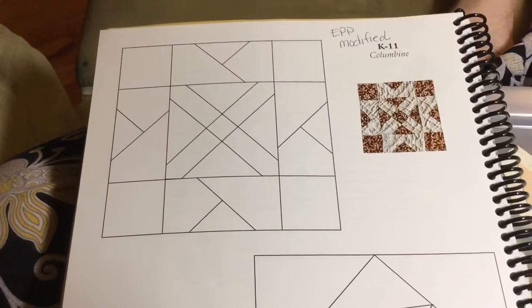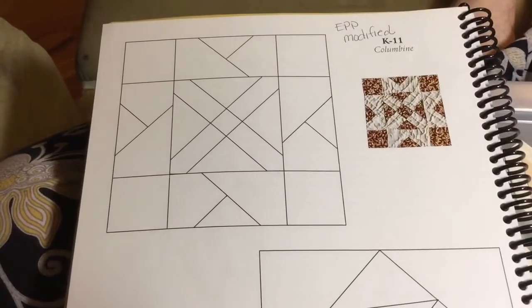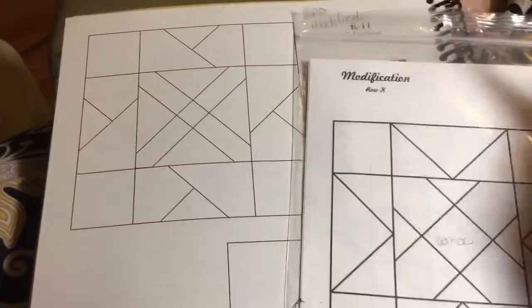K-11 is the next block and it is a modified block, so there's a different layout in the book and the book simplifies it a bit.